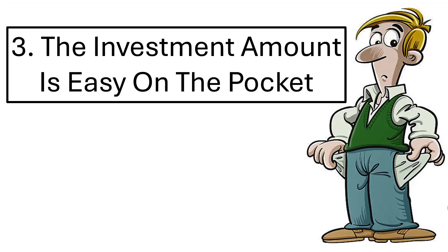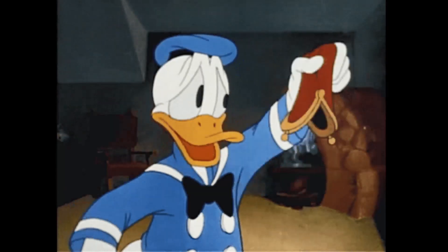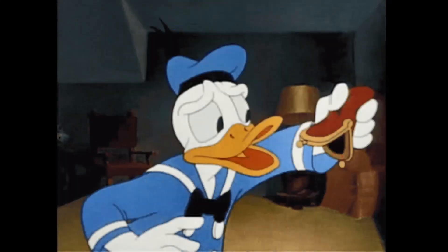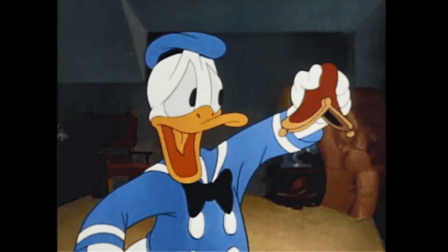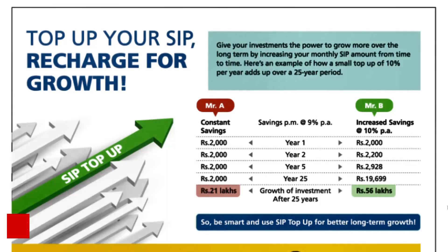Advantage number three: the investment amount is easy on the pocket. SIP investments generally start from Rs 500 per month, but if possible, try investing something more. Since the risks are minimal, you can invest a higher amount without any worry. However, before investing a high amount, try to analyze the growth potential of the stocks invested in general and the market in particular. Therefore, RCA lets you invest less and earn high returns.